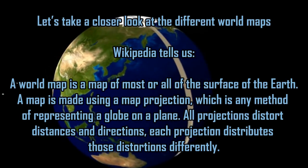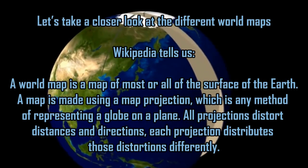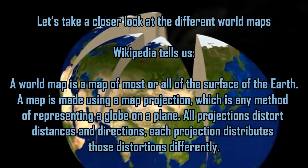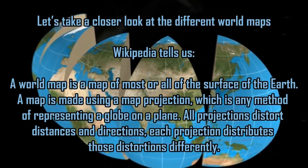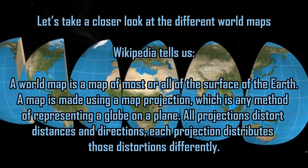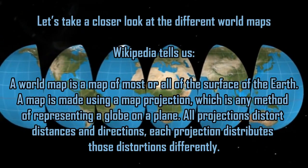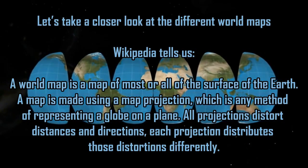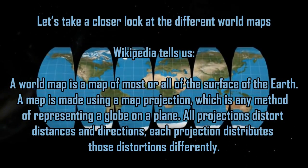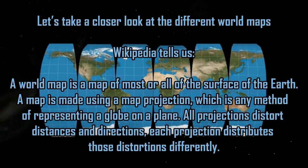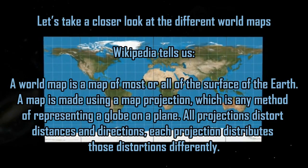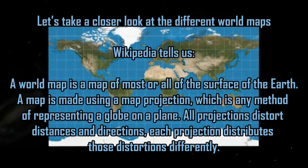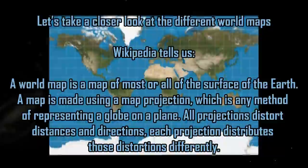Let's take a closer look at the different world maps. A world map is a map of most or all of the surface of the Earth, made using a map projection — any method of representing a globe on a plane. All projections distort distances and directions, and each projection distributes those distortions differently.